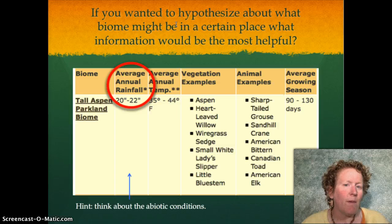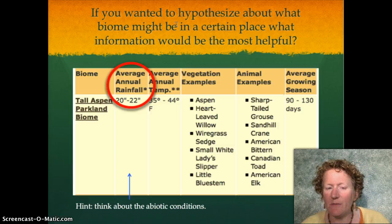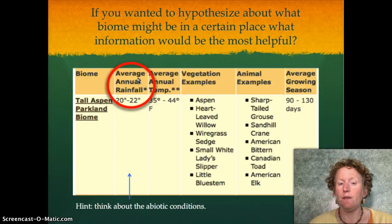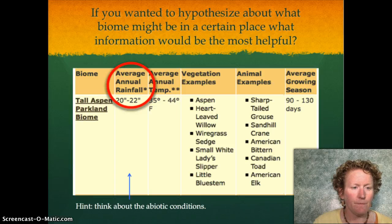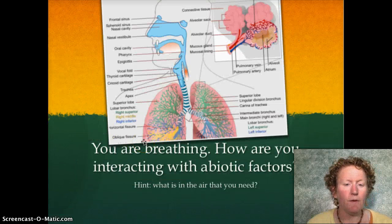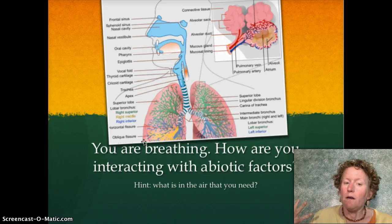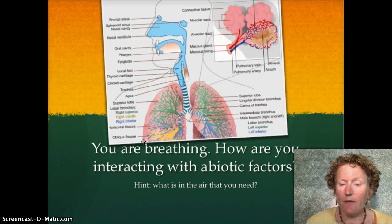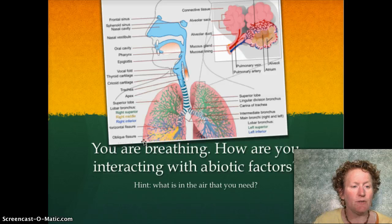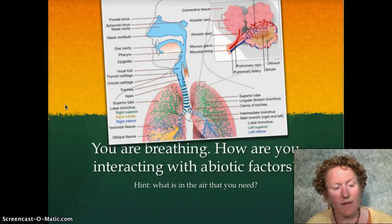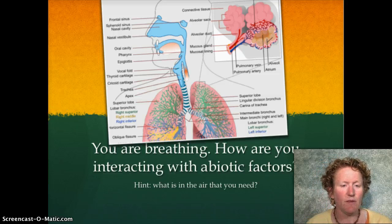If you wanted to hypothesize about what biome might be in a certain place, the key factor is rainfall. If you want to know whether it's going to be a desert or a rainforest, you need to know the annual average rainfall. If you're breathing, how are you interacting with abiotic factors? It's oxygen — oxygen is an abiotic factor. In fact, everything in the air is an abiotic factor, unless you're breathing pollen.